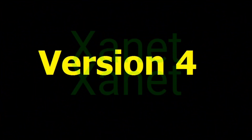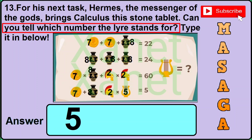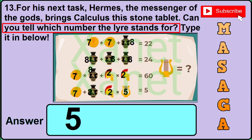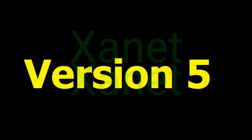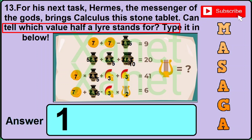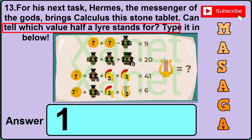Now in version 4 of this question the image is similar to version 3 but the question is different: 'can you tell which number the liar stands for?' The correct answer for this question and image will be 5. Now in version 5, it is asked 'can you tell which value half a liar stands for?' and the correct answer will be 1, so you need to type 1 in the option.